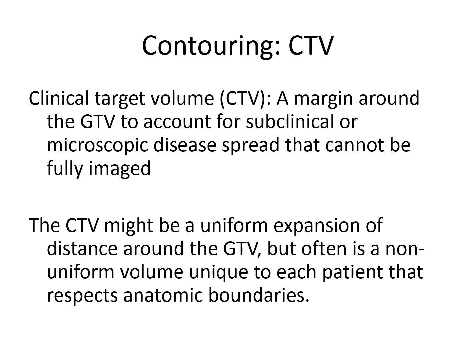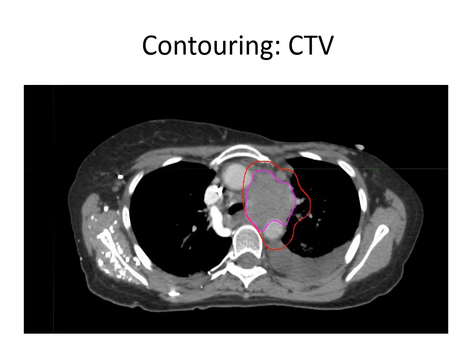Next, we want to identify the CTV, or clinical target volume. The CTV is a margin applied to the GTV to account for subclinical or microscopic disease spread that cannot be fully imaged. The CTV might be a uniform expansion around the GTV, but often it is a non-uniform expansion unique to each patient that respects anatomic boundaries. In this image, the CTV expands into the lung — not because microscopic disease is in the lung parenchyma, but to account for the fact that the mass may move with the patient's respiration.